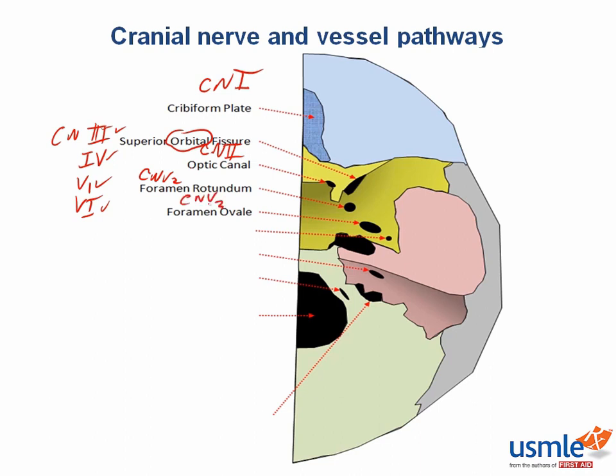You should note that cranial nerve V1, V2, and V3 pass through the skull in numerical order — one, two, and three — from anterior to posterior. One mnemonic is that the divisions of cranial nerve V exit 'owing to standing room only': Superior orbital fissure, then rotundum, then ovale.